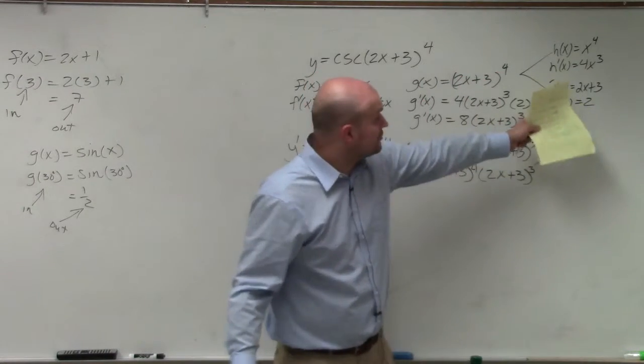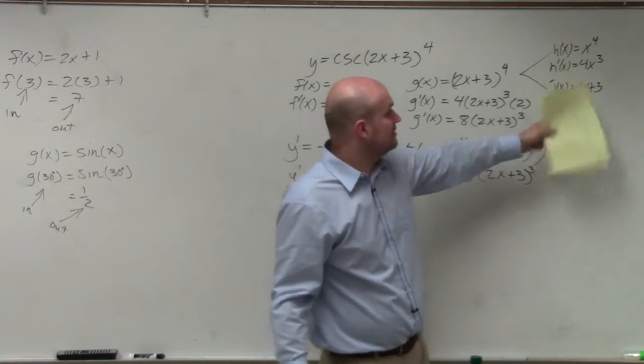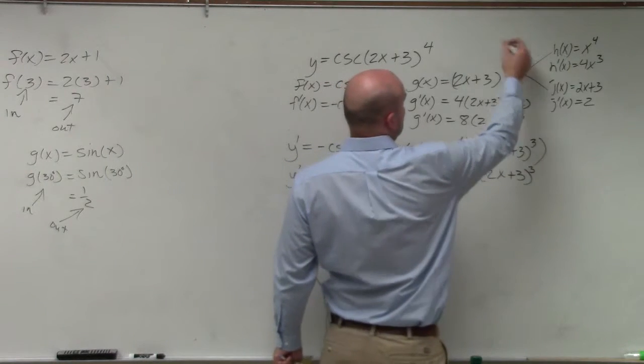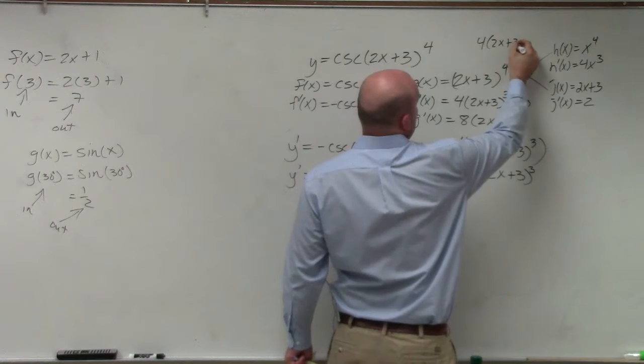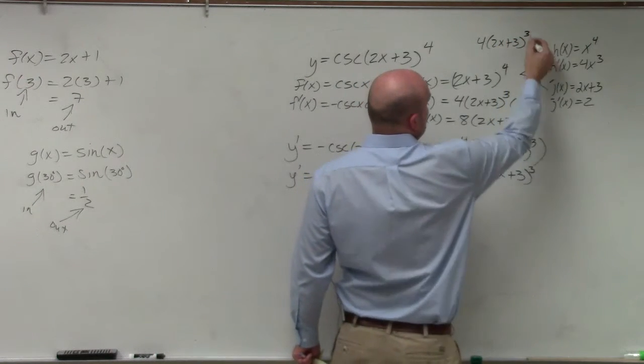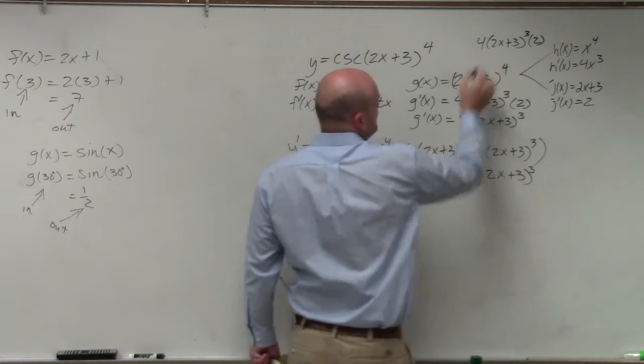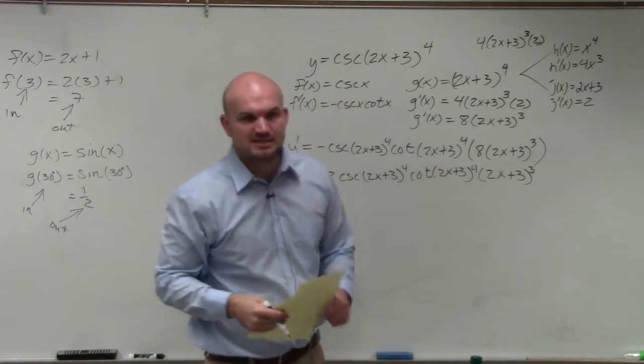So again, to use the chain rule one last time over here, you would use the derivative 4 times 2x plus 3 cubed and then times 2. And 2 times 4 is 8. Does that make sense? Yeah.